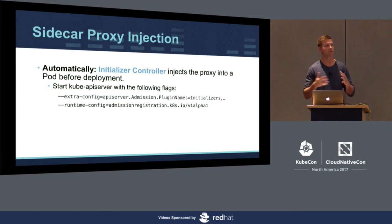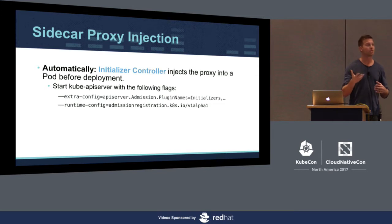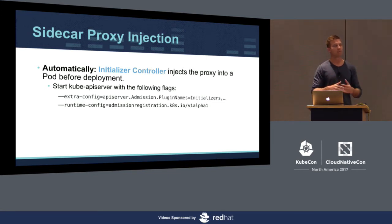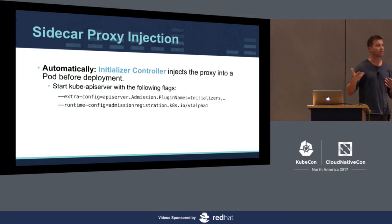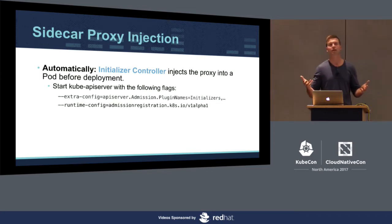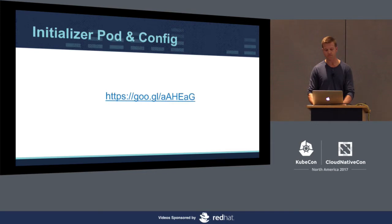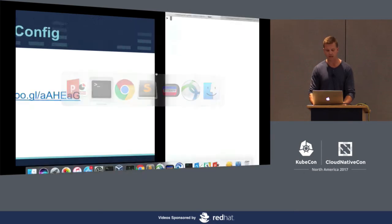The initialization controller is a type of dynamic admission controller. An admission controller sits between when an API request comes into the Kube API server, gets authenticated, and this piece of code gets called before actually persisting the object. So if I say create deployment, after that request is authenticated, the initialization controller gets called. Let's take a look at an initializer pod and config.